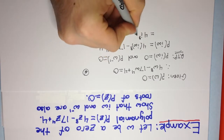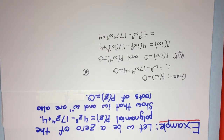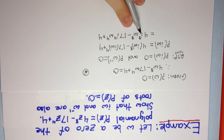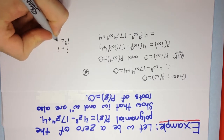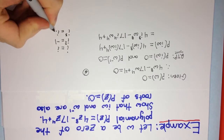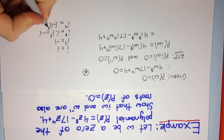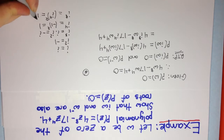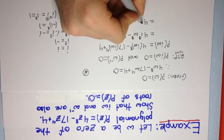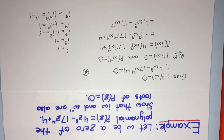We get 4·i⁸·ω⁸ - 17·i⁴·ω⁴ + 4. Now, i⁴ = 1 because i¹ = i, i² = -1, i³ = -i, and i⁴ = (i²)² = (-1)² = 1. And i⁸ = (i⁴)² = 1² = 1. So this simplifies to 4ω⁸ - 17ω⁴ + 4.